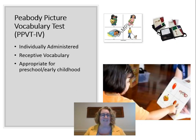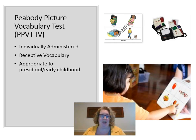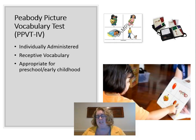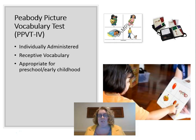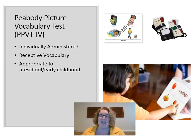The PPVT — the Peabody Picture Vocabulary Test — is an individually administered test of receptive vocabulary. For example, the examiner says 'show me the picture of someone sleeping' and the child points to the correct picture from a set of four. It measures what words the student understands. The flip-chart format starts at a page based on the child's age, with each page getting successively harder, so you don't have to go through all 200-300 questions.